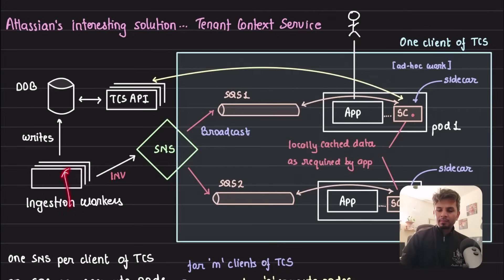Now where does cache invalidation come in? When the write happens to the database, the ingestion worker sends an invalidation request to an SNS topic. This SNS topic is subscribed by multiple SQS queues; each SQS is consumed by one pod. One pod, one SQS, and SNS is taking care of broadcast. SQS is getting this invalidation event, and the sidecar consumes the message from SQS and invalidates its local cache.